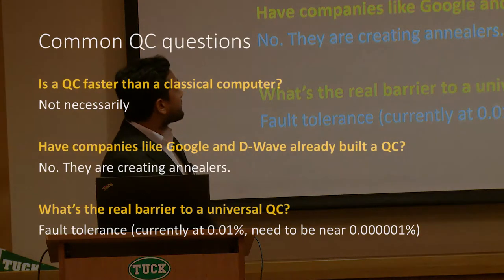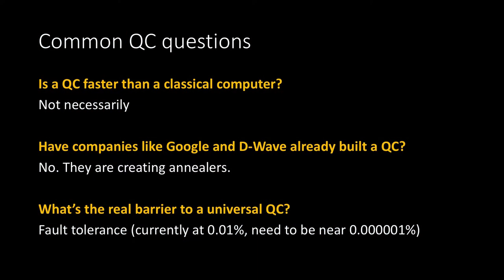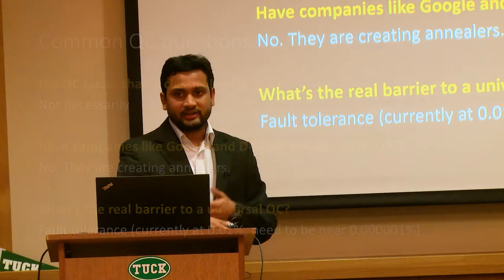Quick common myths: Is a quantum computer faster than a classical computer? Not necessarily — it's faster when implementing Shor's algorithm, but not faster for browsing the internet or doing Facebook. Companies like D-Wave and Google are said to have already created quantum computers — but they haven't created a universal computer. They may have created annealers, which are computers that can do just one job. Think of calculators: they can only calculate, but can't browse the internet. The real barrier to a universal quantum computer is increasing fault tolerance — we're nowhere close to acceptable fault tolerance levels.